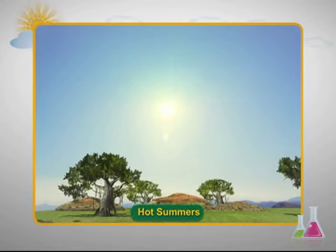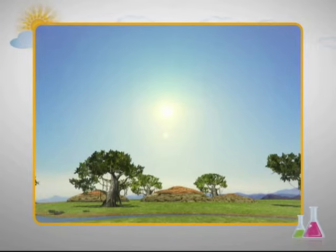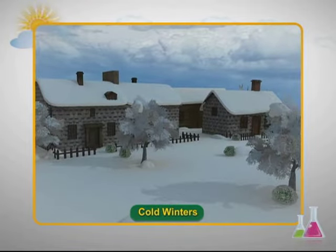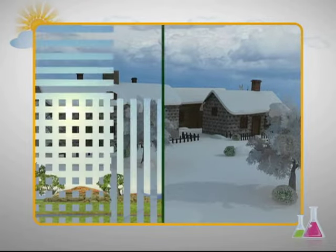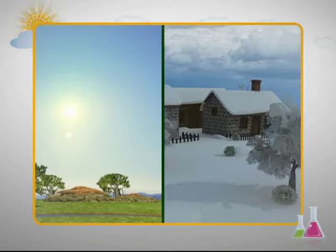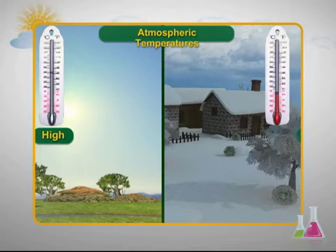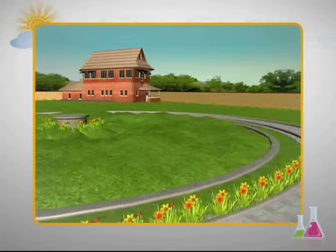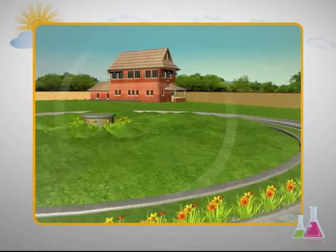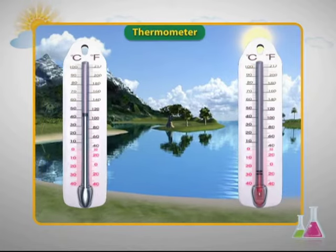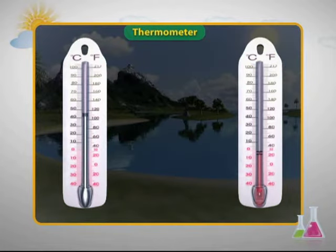Think about a sunny afternoon in the summers — oh how hot will it be! On the other hand, early mornings in the winter months will be freezing cold. Both these uncomfortable conditions arise due to the two extremes of atmospheric temperature — high and low. Atmospheric temperature is the temperature you feel every day; in other words, it is the degree of hotness or coldness of the air around you.